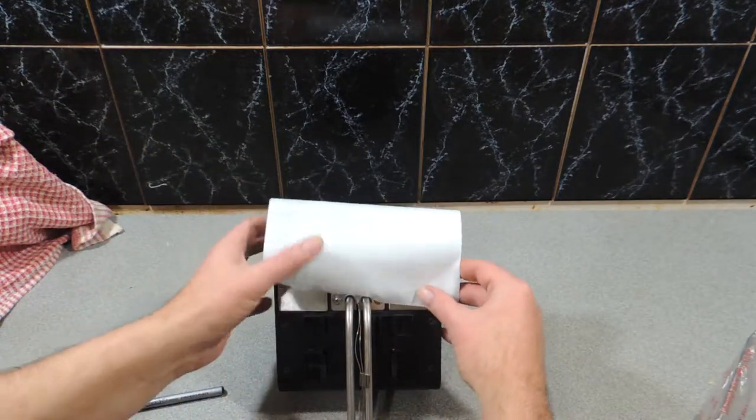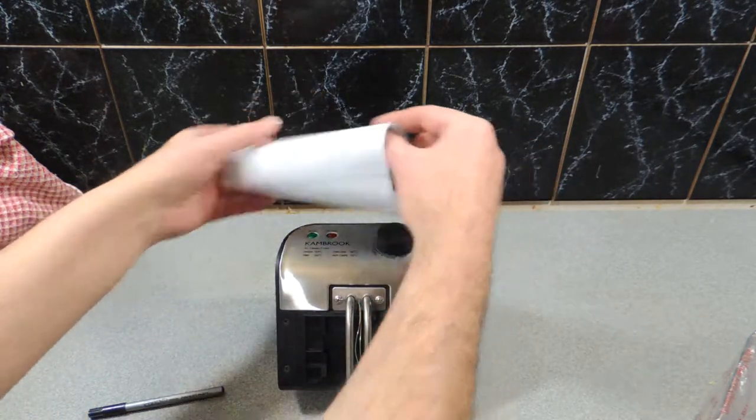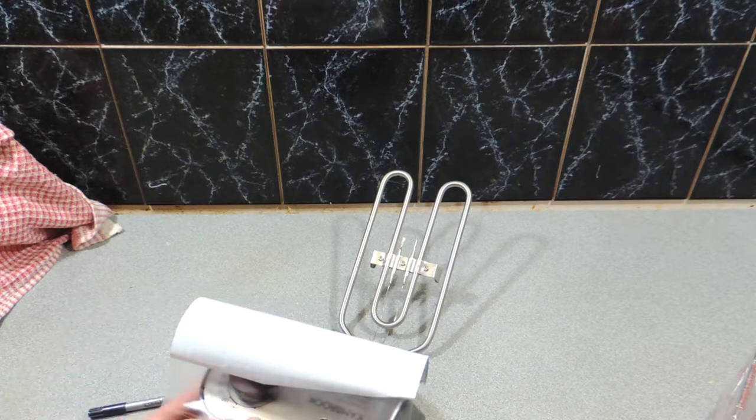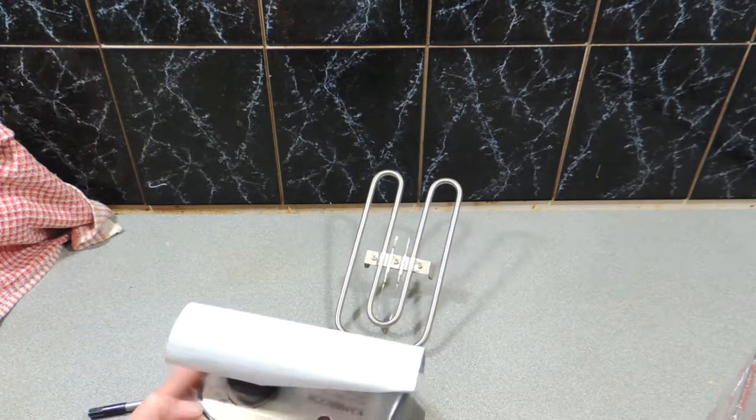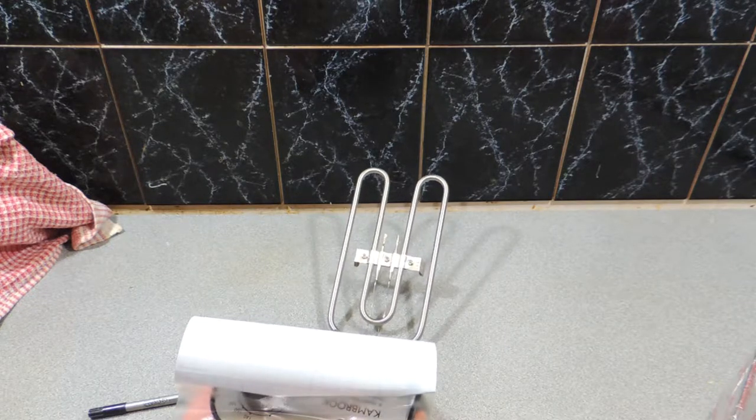Alright, here we go. New deep fryer. This is simple contact book covering that you would use for exercise books, and I've cut out a rough shape and I'm going to apply it to the stainless steel top of the deep fryer.